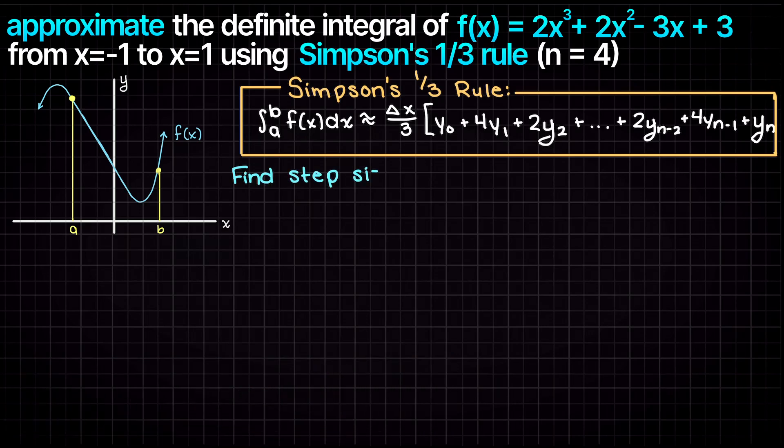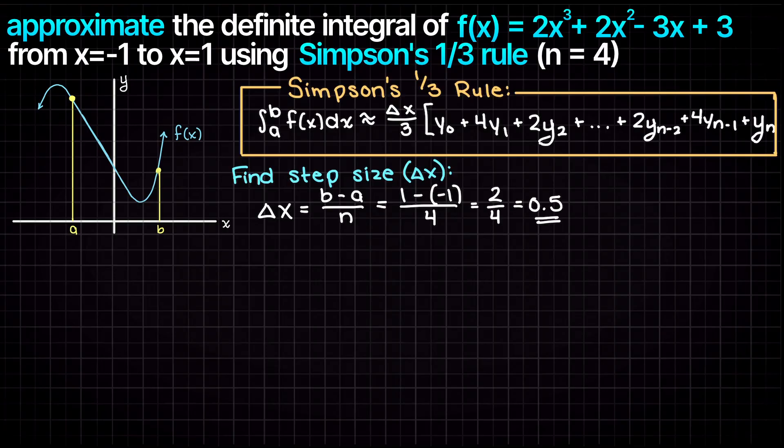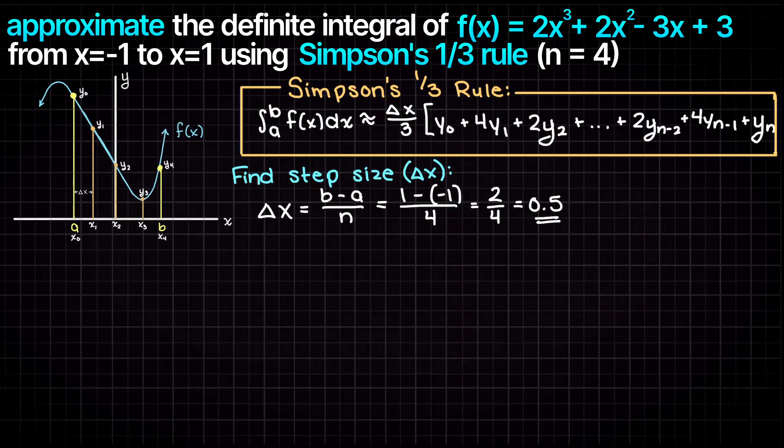Let's now calculate our step size. We know that we want 4 equally spaced intervals, therefore we are going to have step sizes of b-a over n, which is our upper bound 1 minus our lower bound -1 over 4, which gives us a step size of 0.5. Let's add these divisions to our graph now.